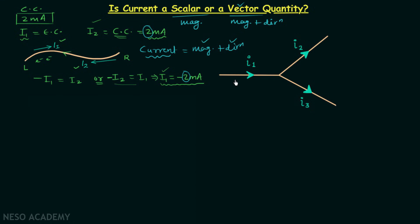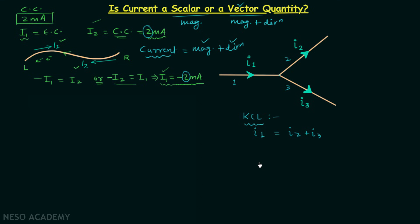In this arrangement there are three wires. Current I1 is flowing in the first wire, current I2 is flowing in the second wire, and I3 is flowing in the third wire. According to KCL, the sum of incoming currents to a node is equal to the sum of outgoing currents. There is only one incoming current, I1, and two outgoing currents, I2 and I3. So I1 is equal to I2 plus I3 according to KCL. We will understand KCL in detail in coming lectures.